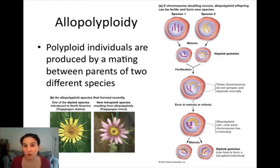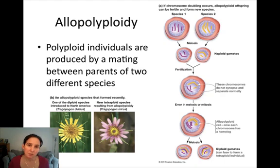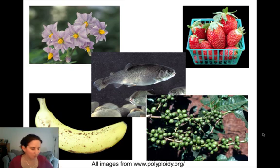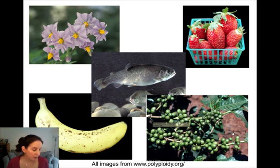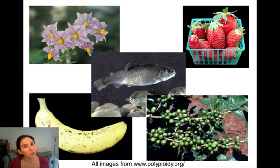These polyploid individuals are reproductively isolated from their diploid parents most of the time. Sympatric speciation by polyploidy is quite frequent, and it happens most notably in our agricultural plants and animals. Potatoes are an example of autopolyploidy; strawberries and coffee are allopolyploidy; bananas are autopolyploidy; and rainbow trout are allopolyploidy. So this is a common phenomenon that impacts not only plants but sometimes animals as well.